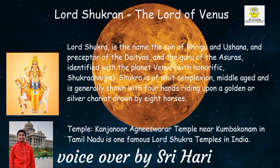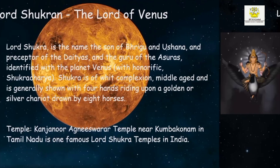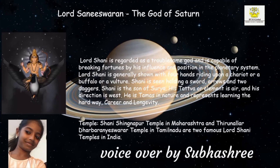Lord Shukra, the Lord of Venus: Shukra is the son of Bhrigu and the preceptor of the Daityas and Guru of the Asuras, identified with the planet Venus. Shukra is of white complexion, middle-aged, and generally shown with four hands riding upon a golden or silver chariot drawn by eight horses. Lord Shani, the God of Saturn: Lord Shani is regarded as a troublesome god capable of breaking fortunes by his influence. He is generally shown with four hands riding upon a chariot, a buffalo or a vulture, holding a sword, arrows and two daggers.